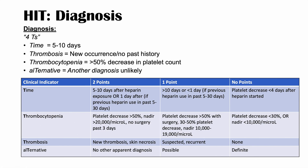The four Ts scoring system assigns points in each category. For time: 5 to 10 days after heparin exposure, or one day after if previous heparin use within the past 5 to 30 days, gives two points. Greater than 10 days or less than one day gives one point. Platelet decrease less than four days after starting heparin with no previous exposure gives no points. For thrombocytopenia: a decrease greater than 50% with a nadir of 20,000 per microliter or more and no surgery in the past three days gives two points.